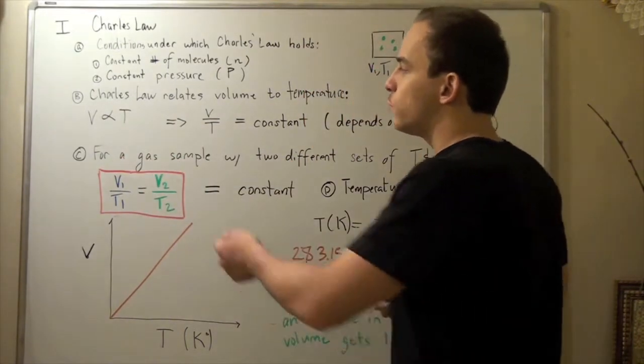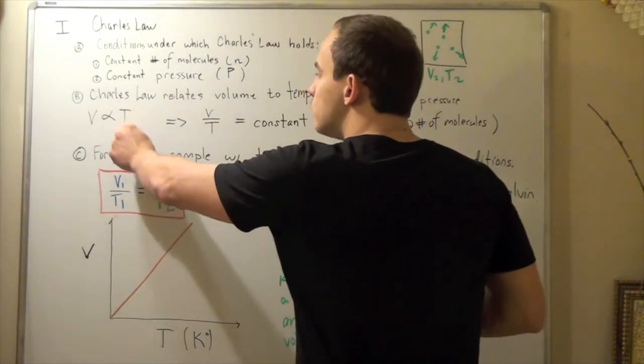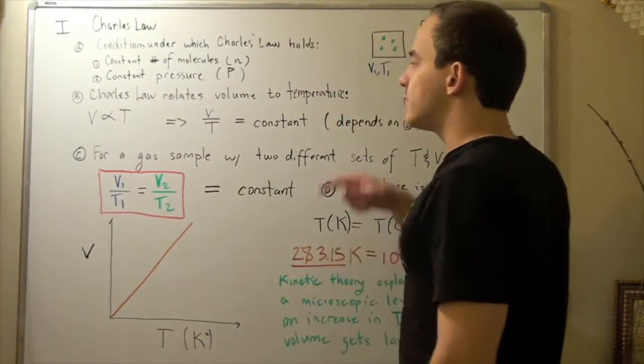This means if we bring the T over, or if we multiply a constant by T and bring T over, what we get is V divided by T equals a constant.